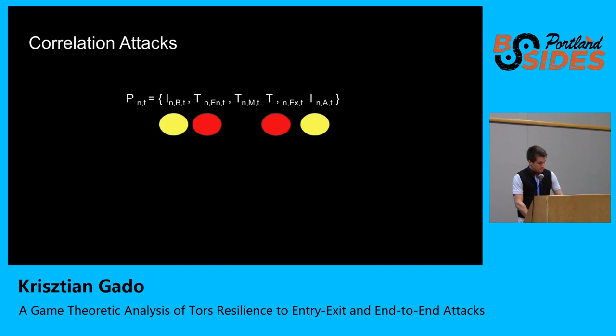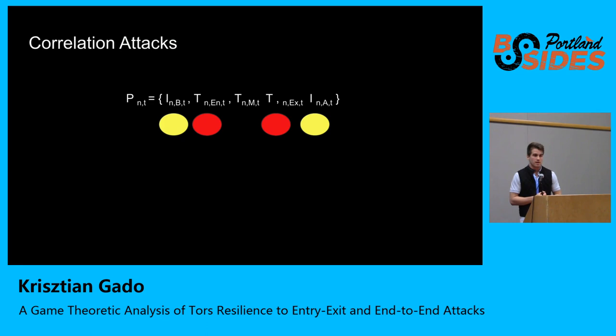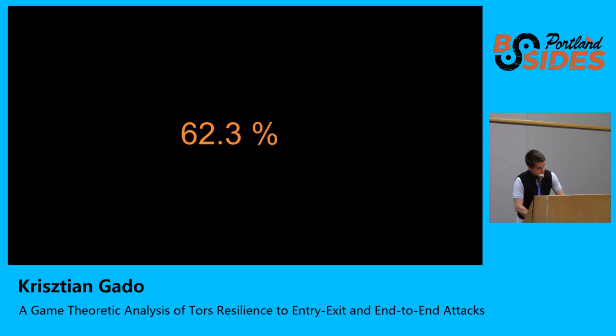An attacker would make all their nodes exit-eligible, because exit-eligible nodes can be selected as both entry and exit nodes — they double-dip. They would also maximize their bandwidth, since higher-bandwidth nodes have a higher probability of being selected. Based on our simulations, with only a few corrupted nodes, you would be safe only 60% of the time if you use Tor over a year.